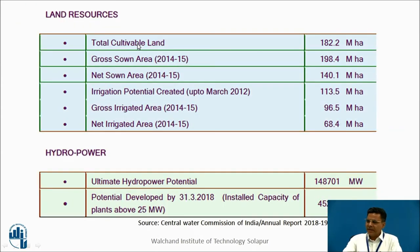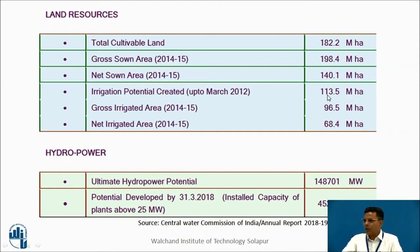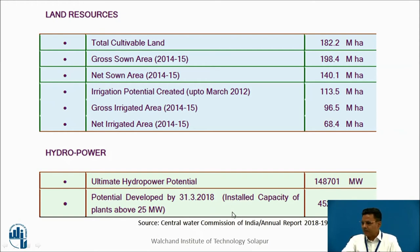Total cultivable land of India is 182.2 million hectares, gross sown area is 198.4 million hectares, and net sown area is 140.1 million hectares. Irrigation potential created is 113.5 million hectares; gross irrigated area in 2014-15 was 96.5 million hectares and net irrigated area was 68.4 million hectares. We also use water for hydropower — the ultimate hydropower potential of India is 1,48,701 megawatts, and potential developed by end of 2018 is 45,293 megawatts, indicating good scope for further hydropower harvesting.